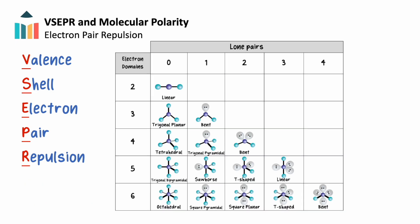To understand VSEPR theory, we'll analyze the relationship between a molecule's number of electron domains and its corresponding geometry and bond angles.